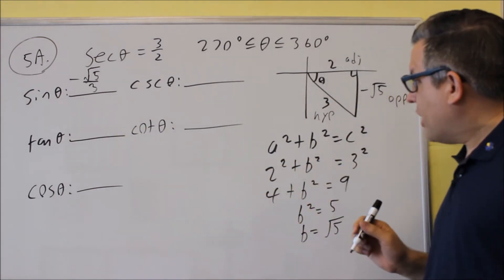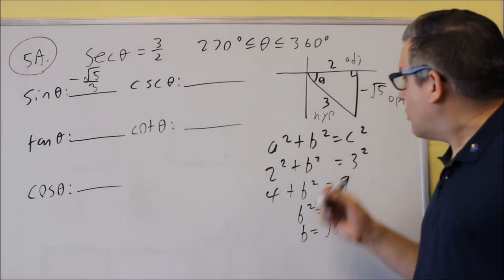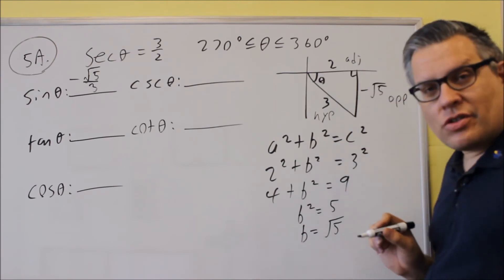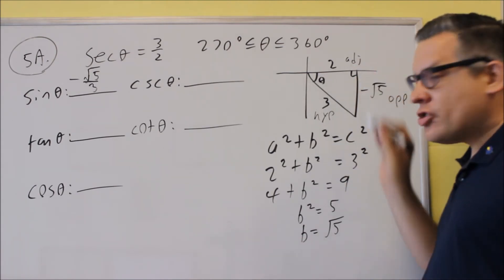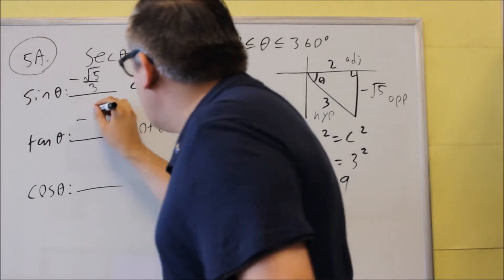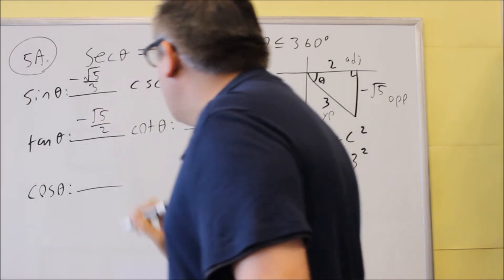Let's do tangent next. Tangent would be opposite over adjacent. Opposite is negative square root of five over adjacent, which is two. This is negative square root of five over two.